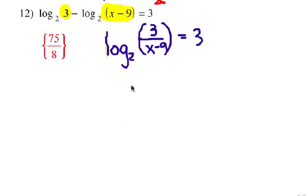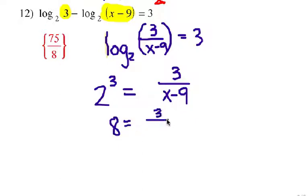So, write it exponentially. Two to the third power equals three over x minus nine. That means eight equals three over x minus nine. All right, similarly, we're going to be cross-multiplying there. Eight times x minus nine.